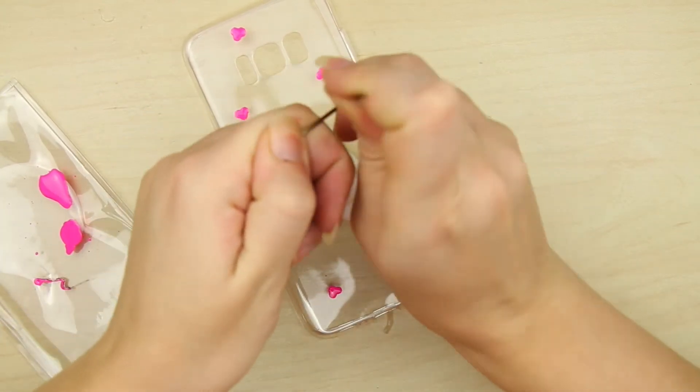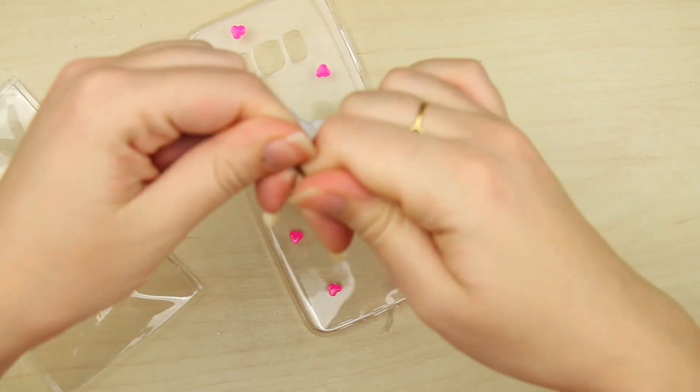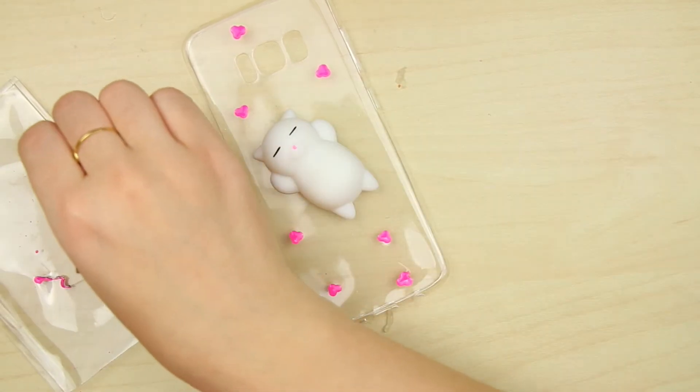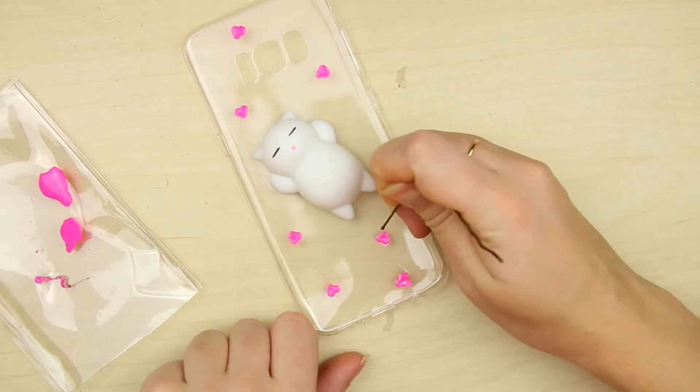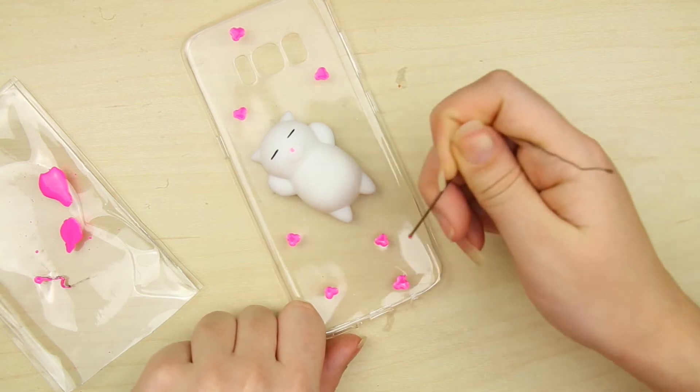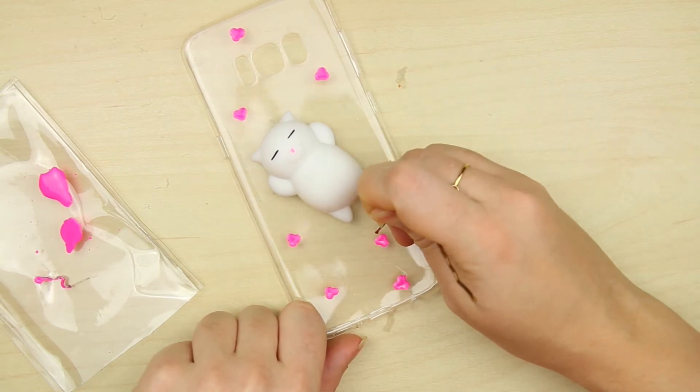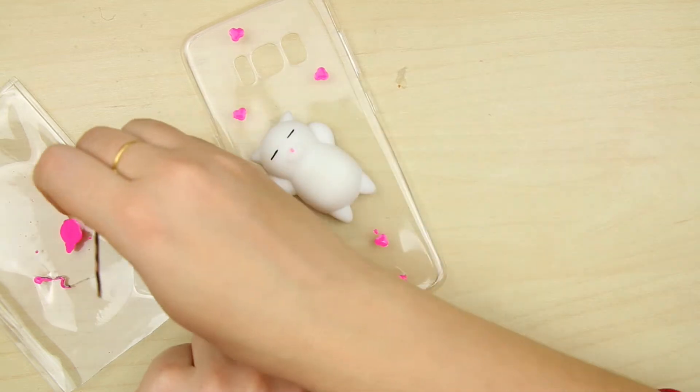Now again with the smaller dotting tool, or like me with a bobby pin, create little paw fingers. I don't understand anything about cats. How do you even call those? But I think you know what I mean.